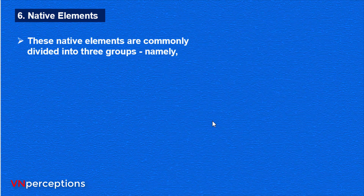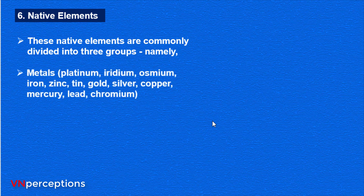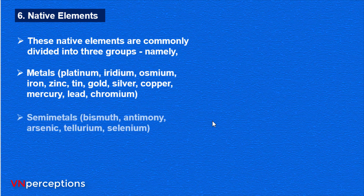The native elements are commonly divided into three groups. In the metals category: platinum, iridium, osmium, iron, zinc, tin, gold, silver, copper, mercury, lead and chromium. When it comes to semi-metals: bismuth, antimony, arsenic, tellurium and selenium. Non-metals include sulphur and carbon.